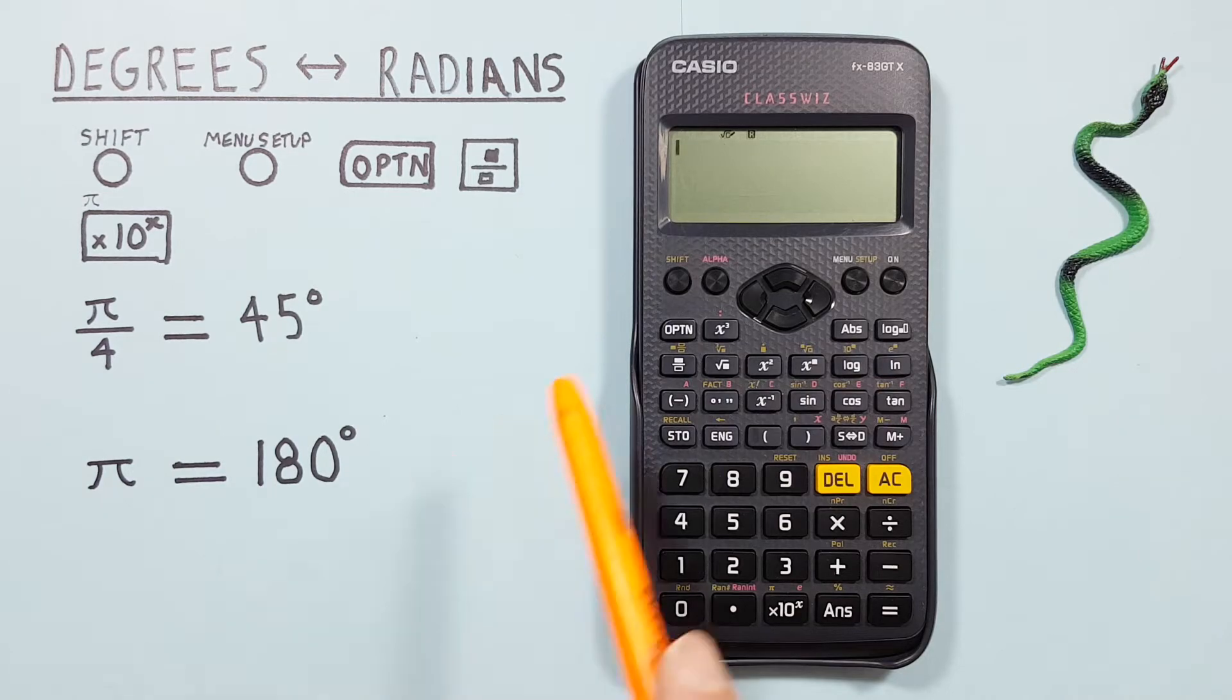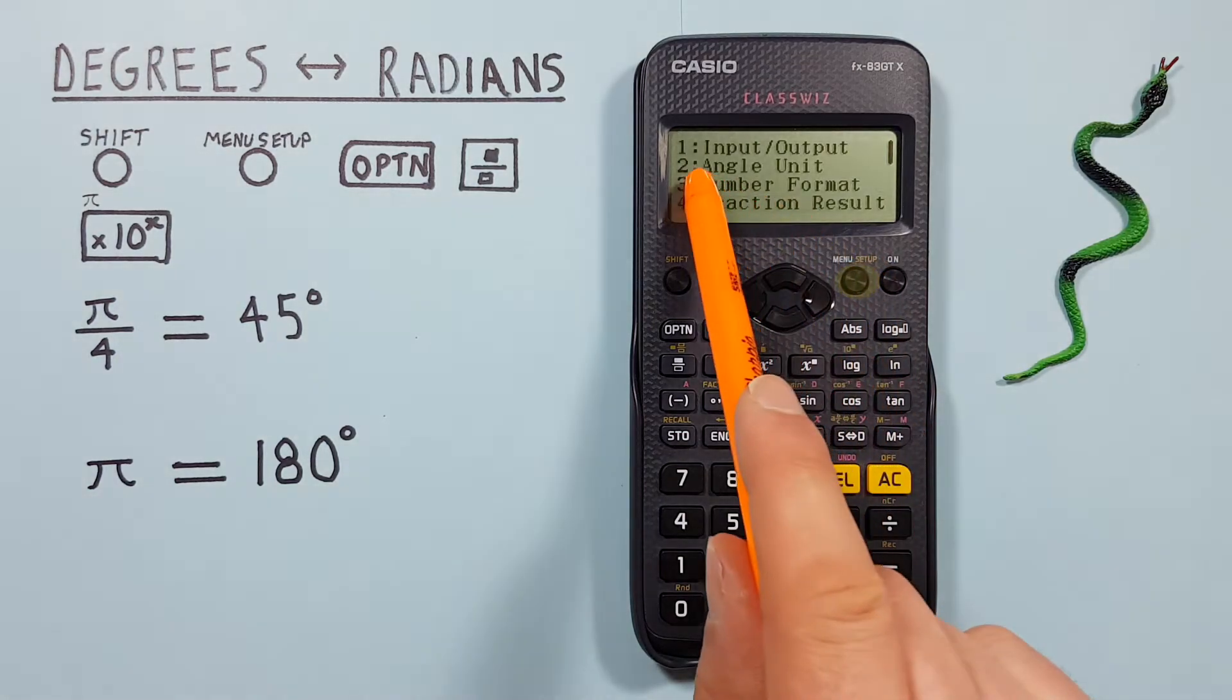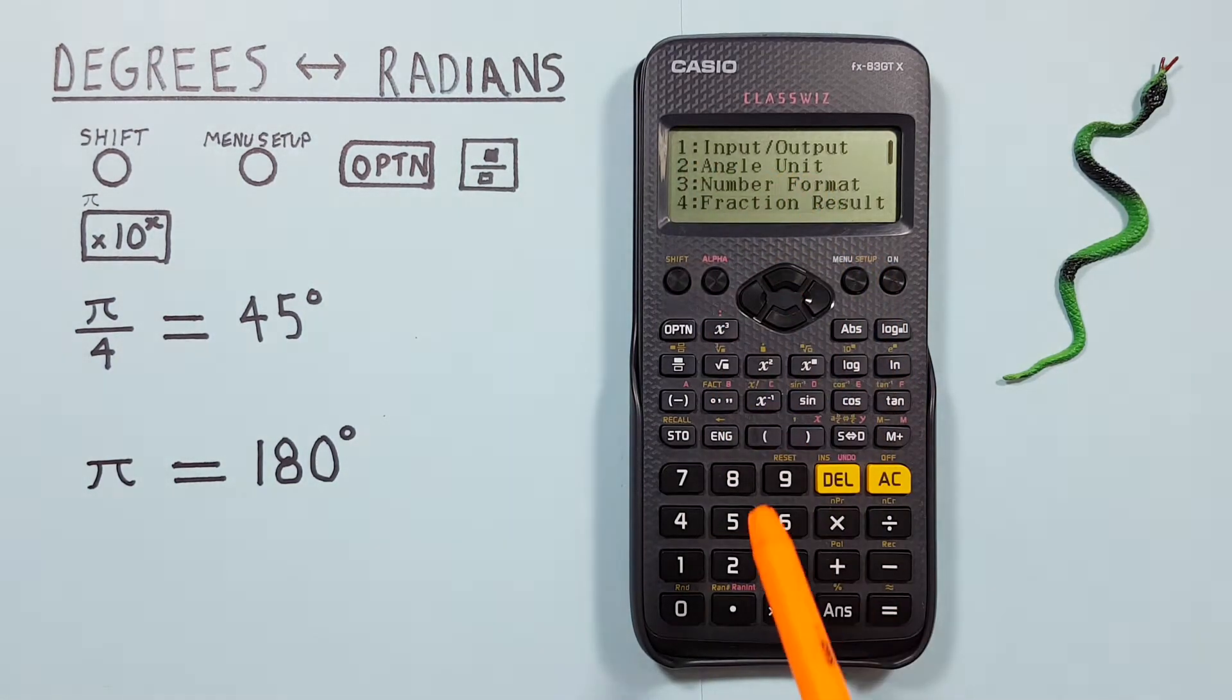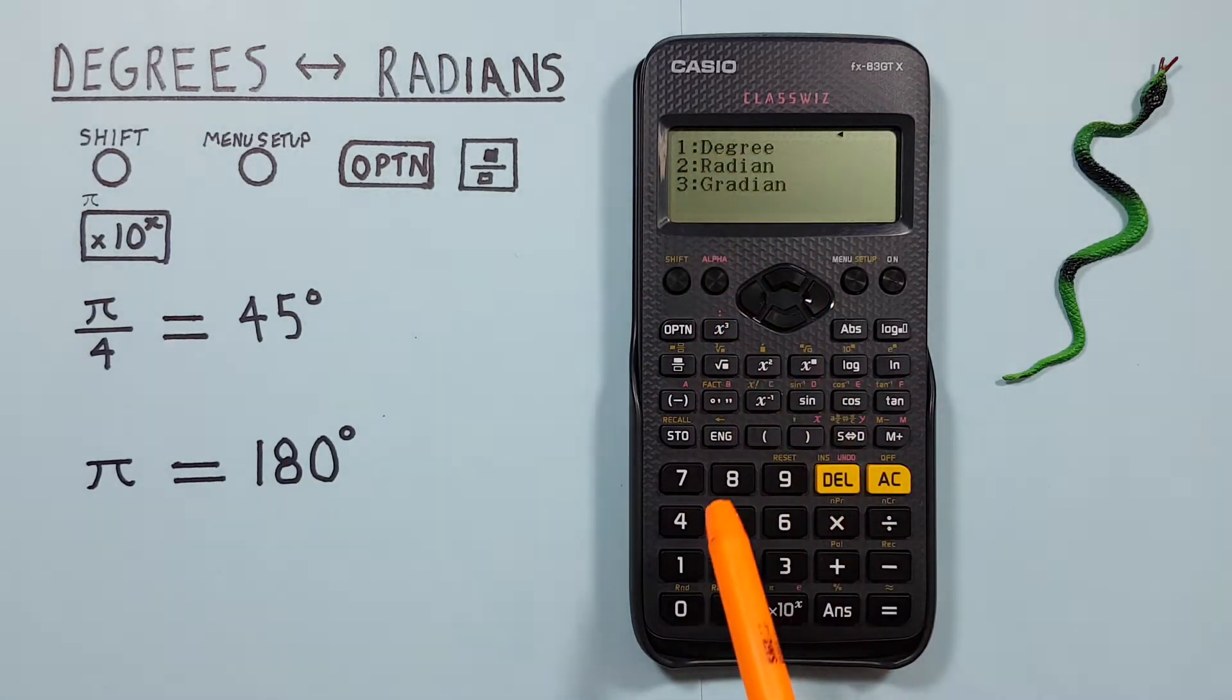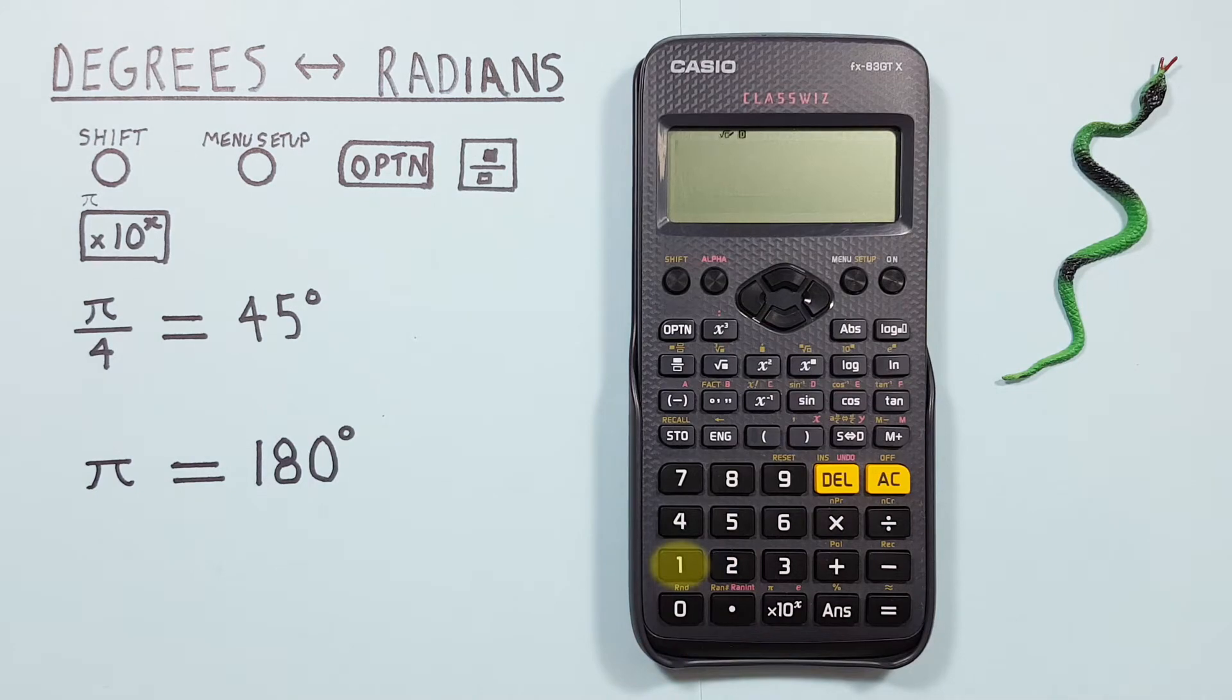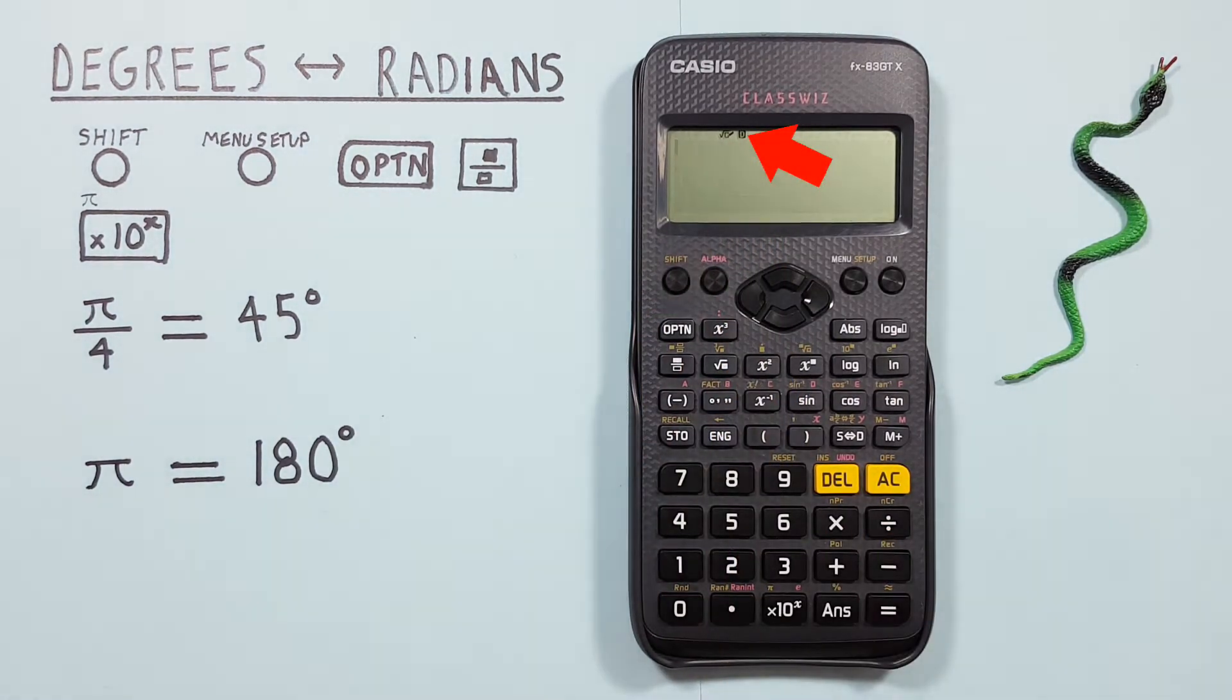To do this, we press Shift and then the Menu Setup key, and then choose number 2, Angle Unit. We want our result in degrees, so we press number 1 for degree. And now we see a D at the top of our screen, letting us know we're in degrees mode.